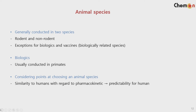The first consideration for repeat dose toxicity testing design is animal species. Usually rodents and non-rodents are used for general toxicity repeat dose testing. However, for vaccines or biologics, the species may have different biological relations, so biologically related species considering the human need to be selected. For biologics, primates are usually used, but sometimes rodents and non-rodents can be used too. The PK profile of human and the animal's PK profile need to be compared and must be comparable so that toxicity data from animals can be extrapolated to humans.